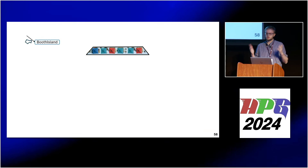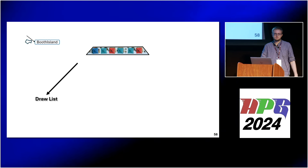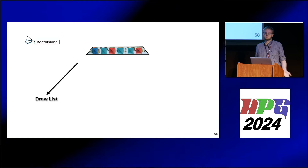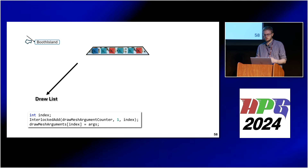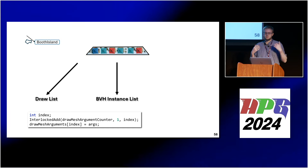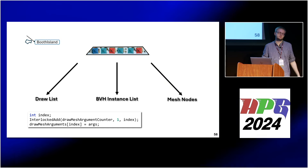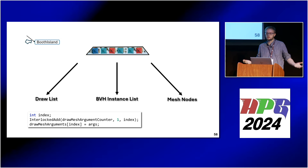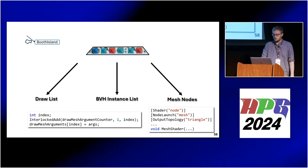Let's look at how the booth island generates geometry. We want to fill a quad control structure with market booths. One option is to write to a draw list and later use execute indirect. A more modern approach is to write to a BVH instance list and build a TLAS from it. The most recent addition to work graphs are graphic leaf nodes, where you can directly draw from the work graph using a mesh shader. These are all three options.